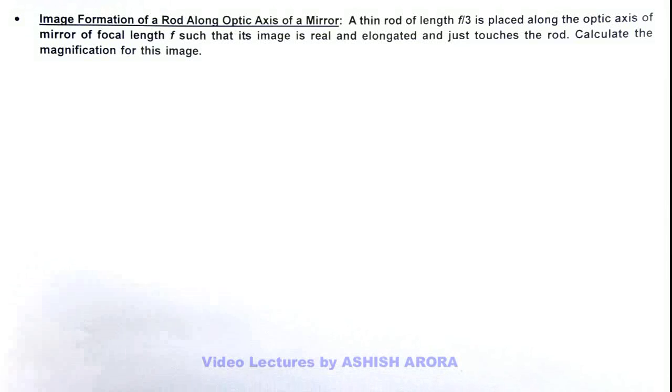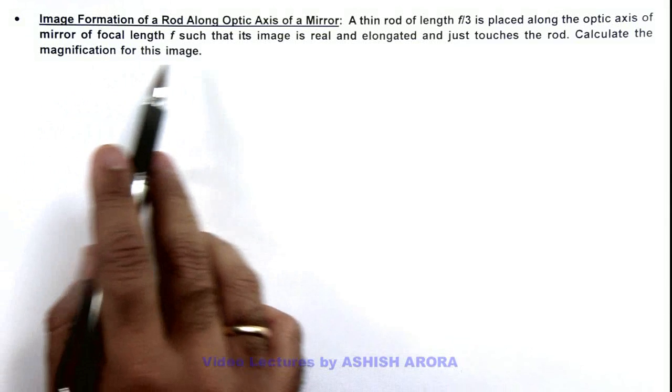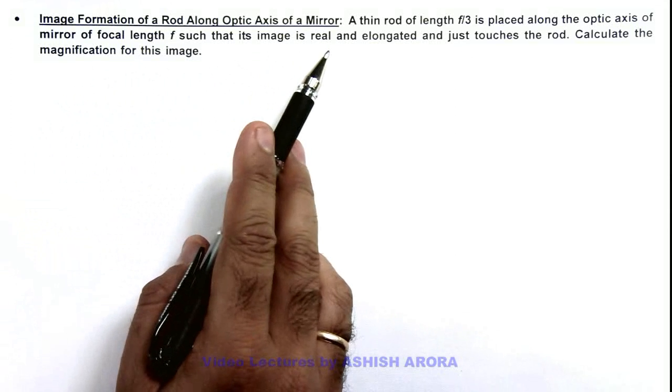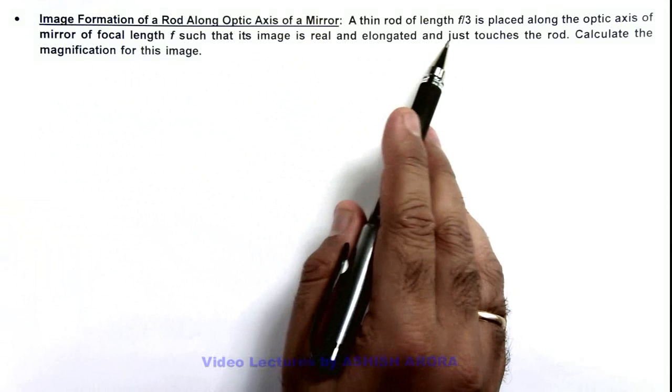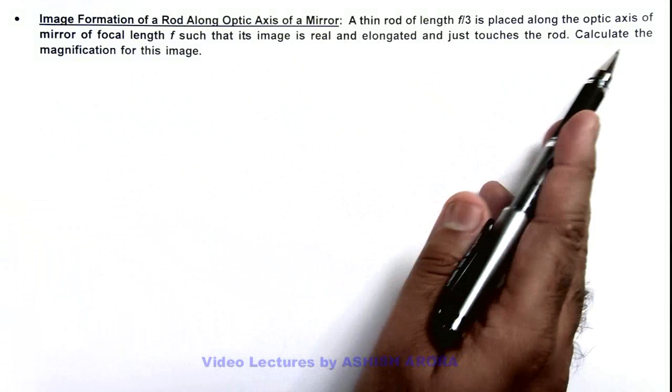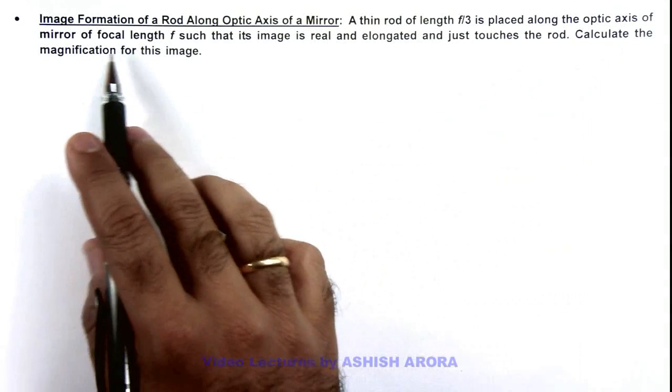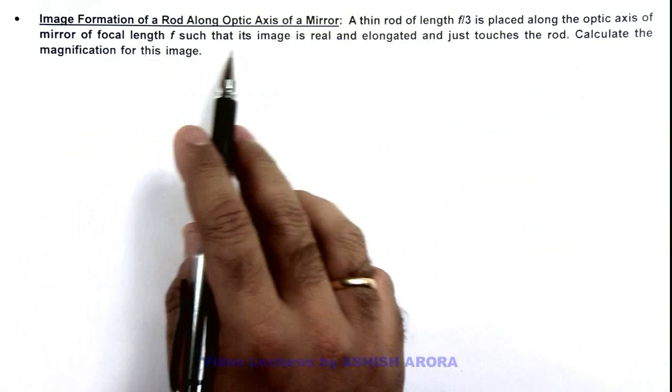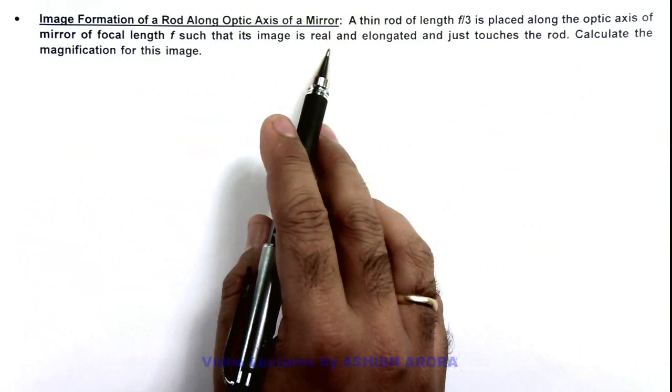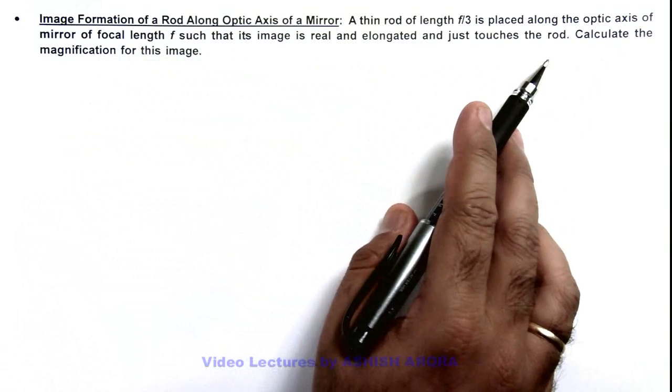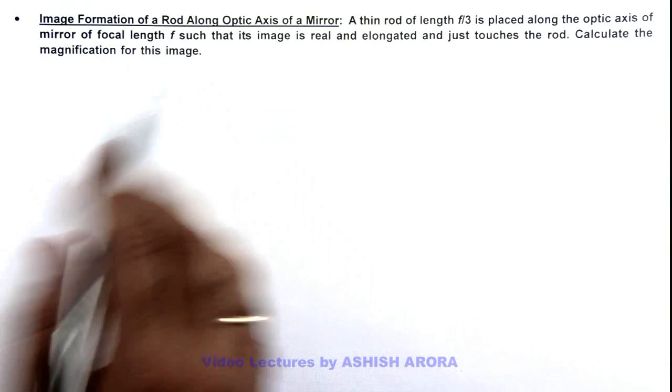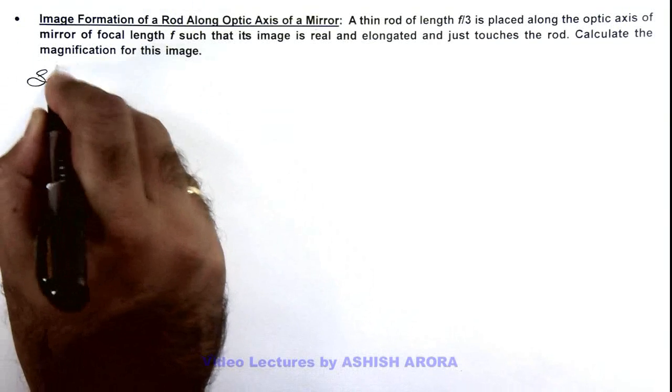In this illustration we'll discuss image formation of a rod along the optic axis of a mirror. Here we are given that a thin rod of length f by 3 is placed along the optic axis of a mirror of focal length f, such that its image is real and elongated and just touches the rod. We are required to find the magnification for this image.